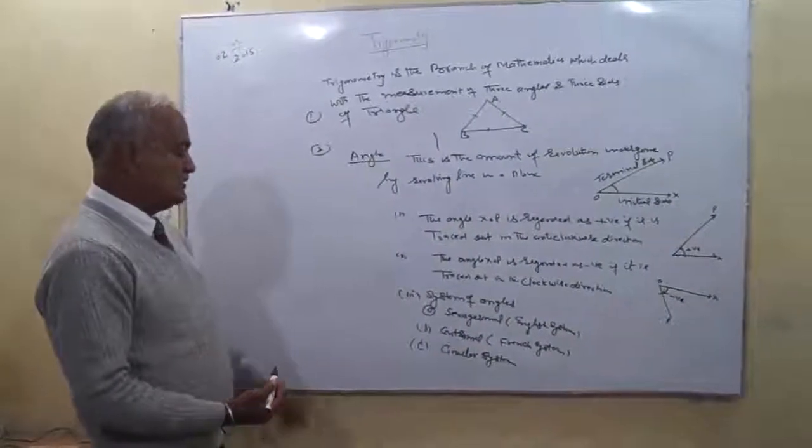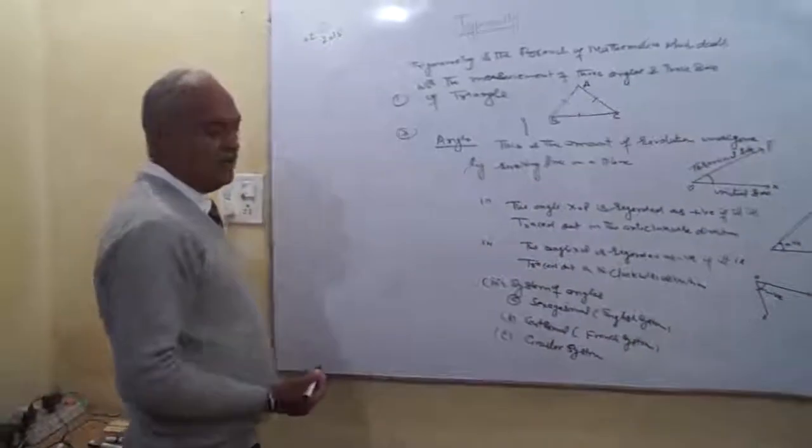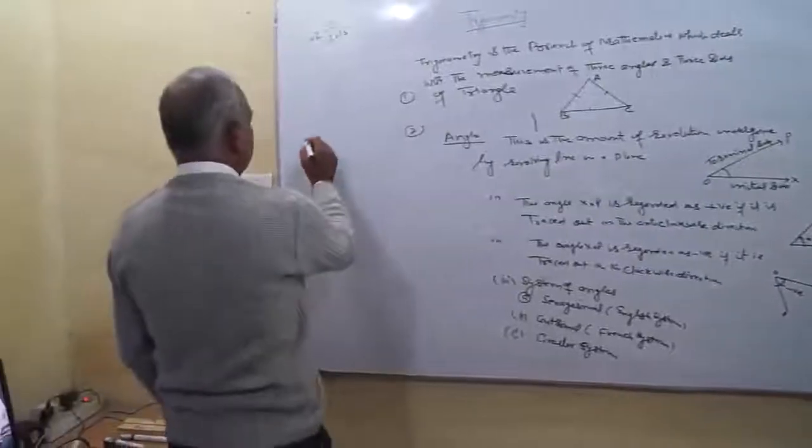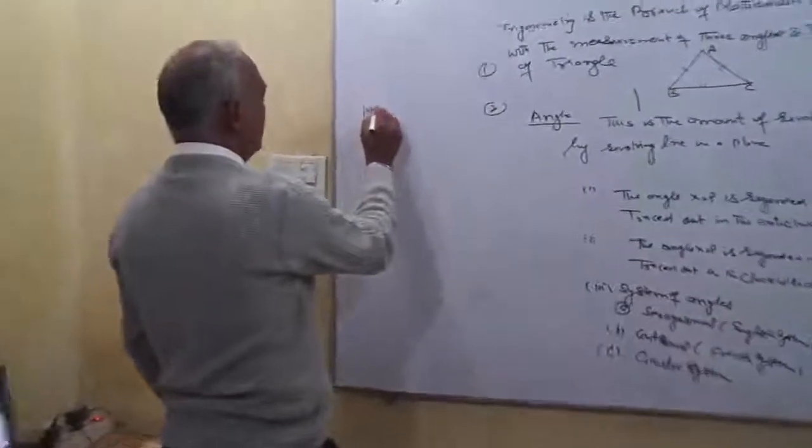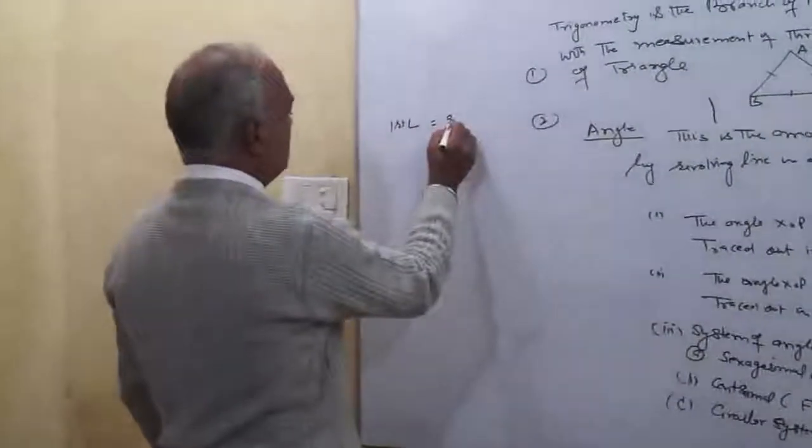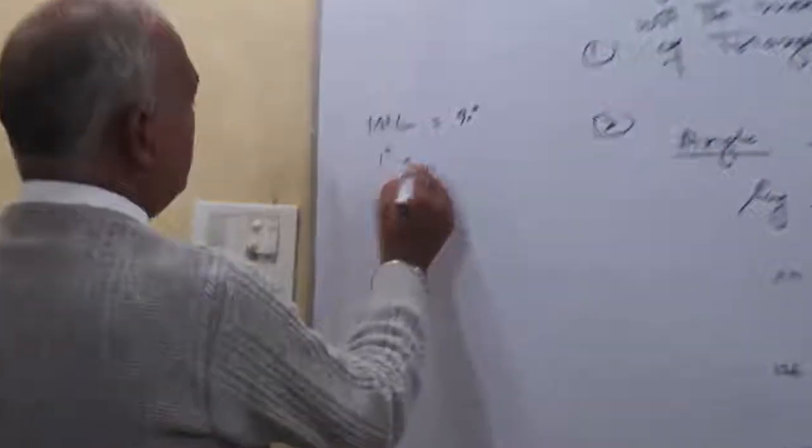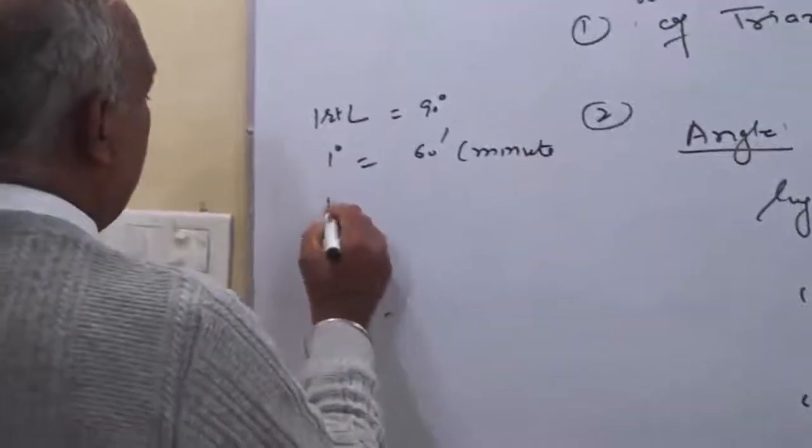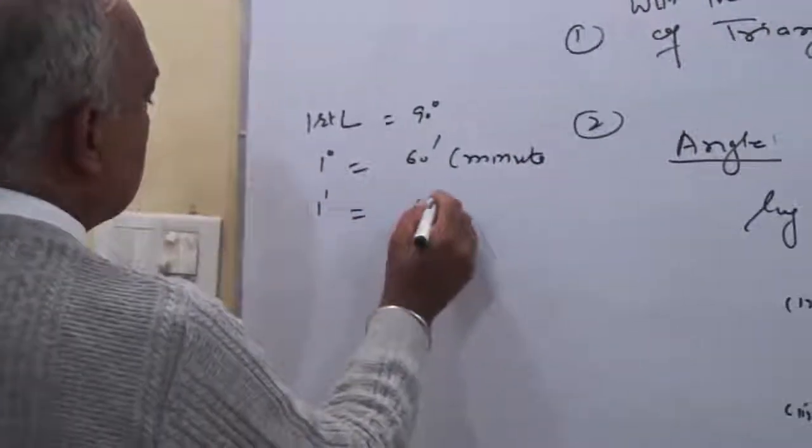First, the sexagesimal system. In this system, the angle of measurement is degree. One right angle equals 90 degrees, one degree equals 60 minutes, and one minute equals 60 seconds.